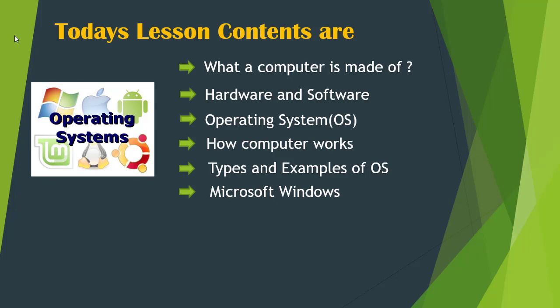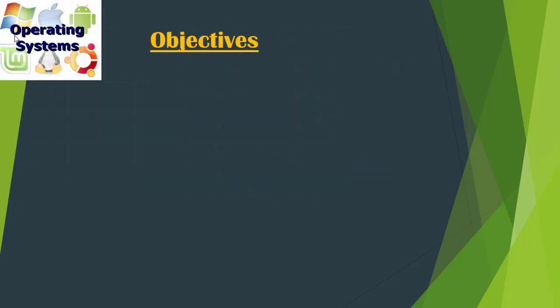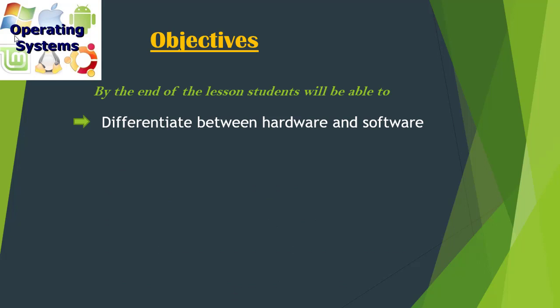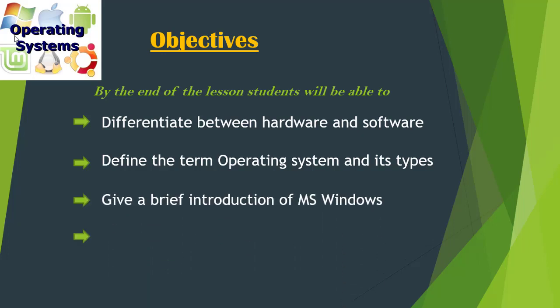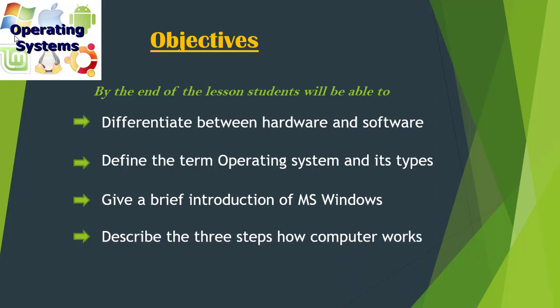Before we start the lesson contents, let's see the objectives. By the end of the lesson, students will be able to differentiate between hardware and software, define the term Operating System and its types, give a brief introduction of MS Windows, and describe the 3 steps of how a computer works. These are the objectives of our today's lesson.